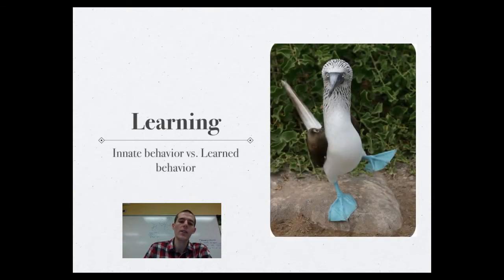Now along with that, there is innate behavior versus learned behavior. Innate behavior is a behavior that is present in an animal from the time it's born. It has nothing to do with actual learning. It's just like a switch. You flip that switch on, give the animal the proper stimulus, it goes through the behavior without ever having seen it before.